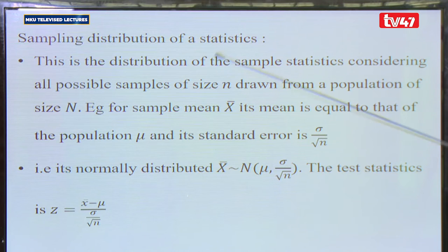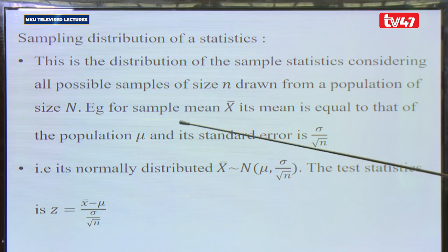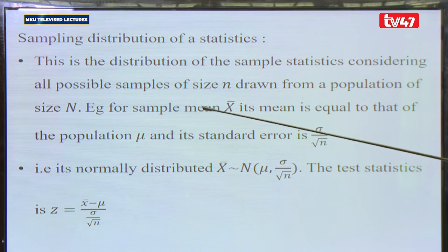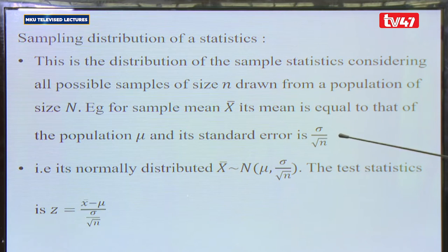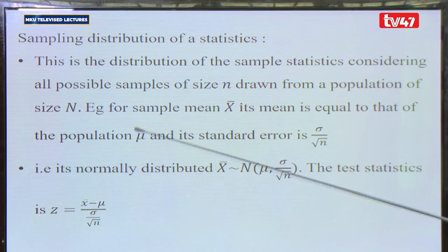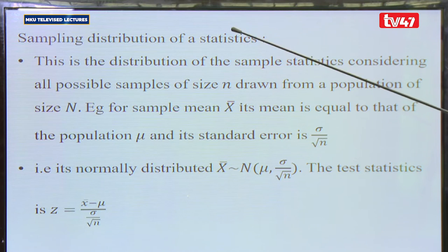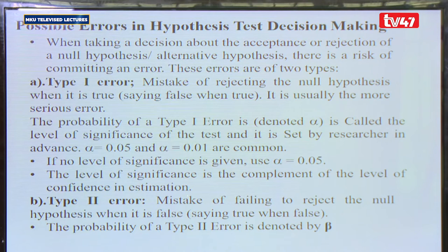The sampling distribution of the statistic considers all possible samples of size n drawn from a population of size N. For the sample mean, its mean equals the population mean, and its standard error equals the population standard deviation divided by the square root of the sample size. It is normally distributed, and the Z-statistic is used for the critical region. We are now going to look at possible errors in hypothesis test decision making.